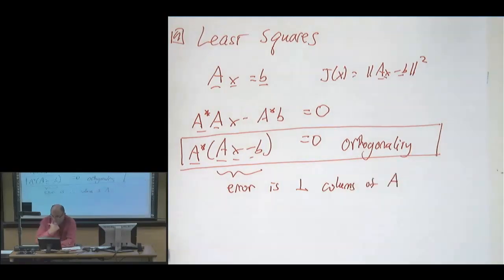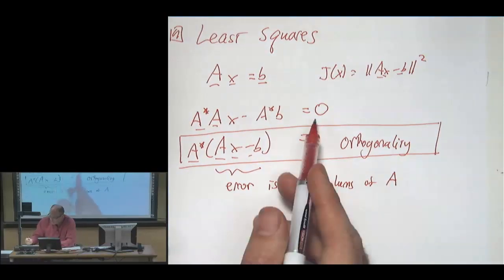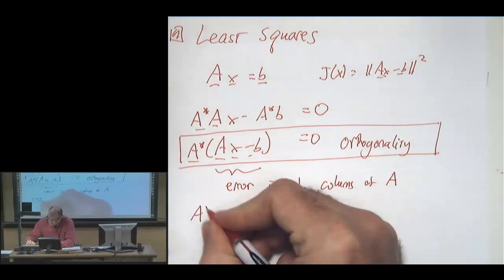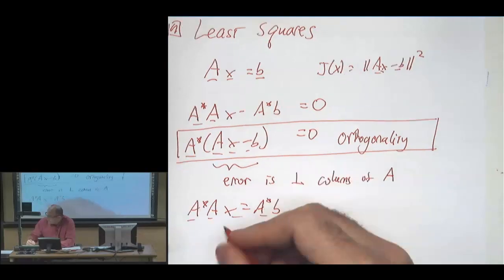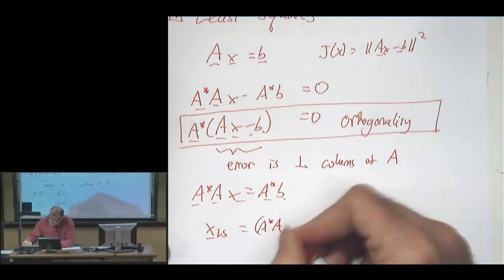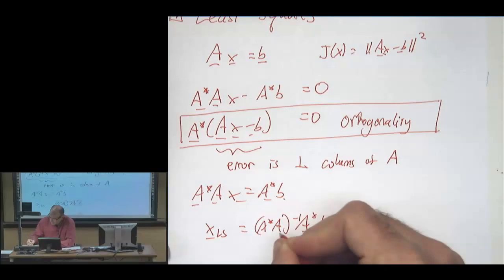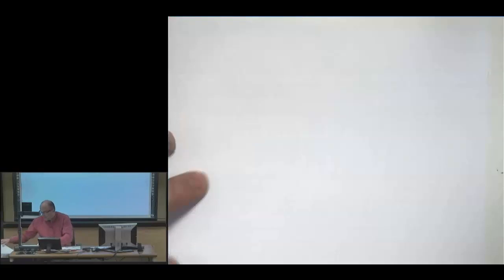Since the error is orthogonal to the columns of A, it's orthogonal to any linear combination of those columns — that is, the span of A. By moving b to the other side, we get the normal equations: A* Ax = A* b. Solving, we find x least squares equals (A* A)^{-1} A* b, and this is the pseudoinverse of A.